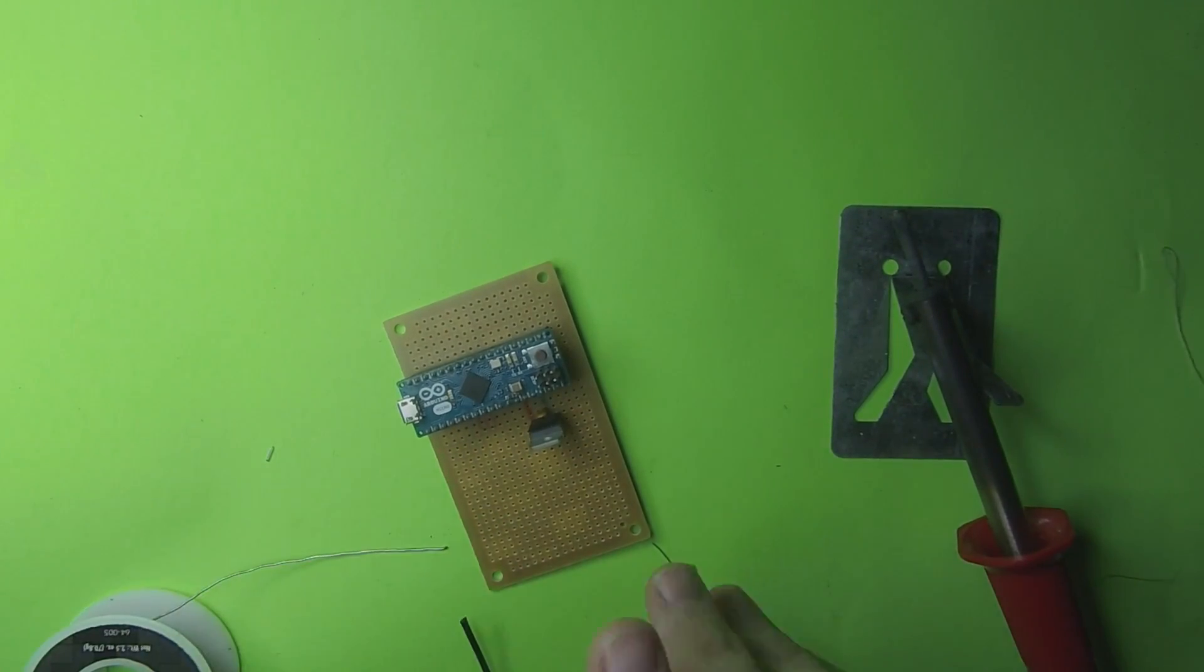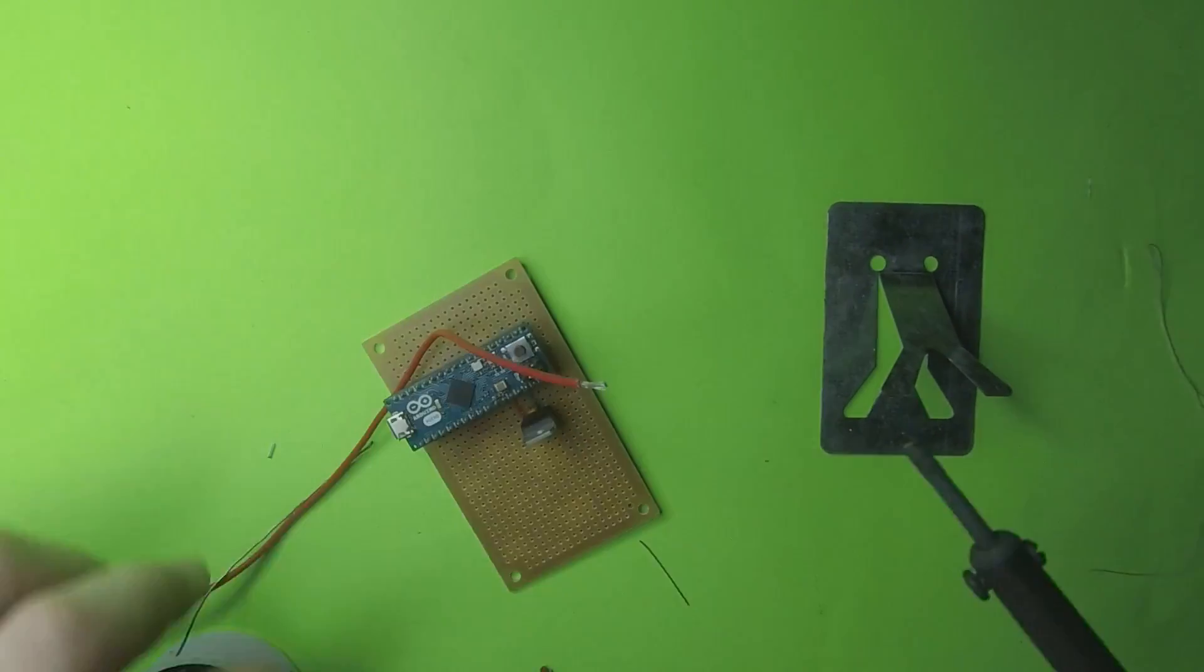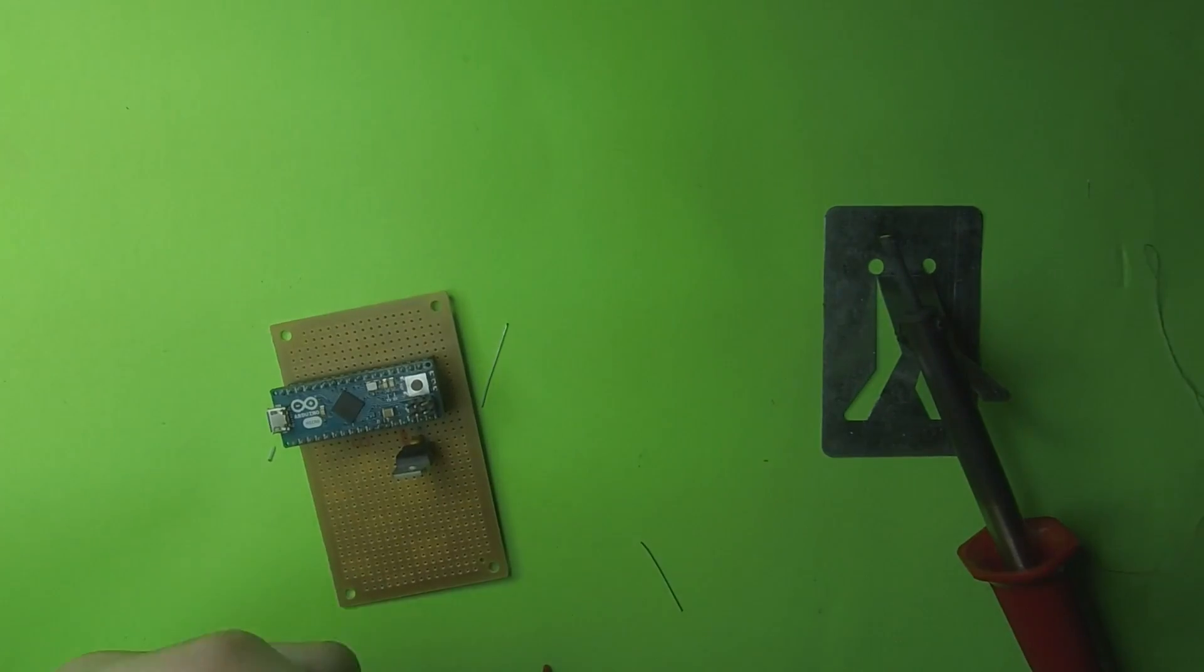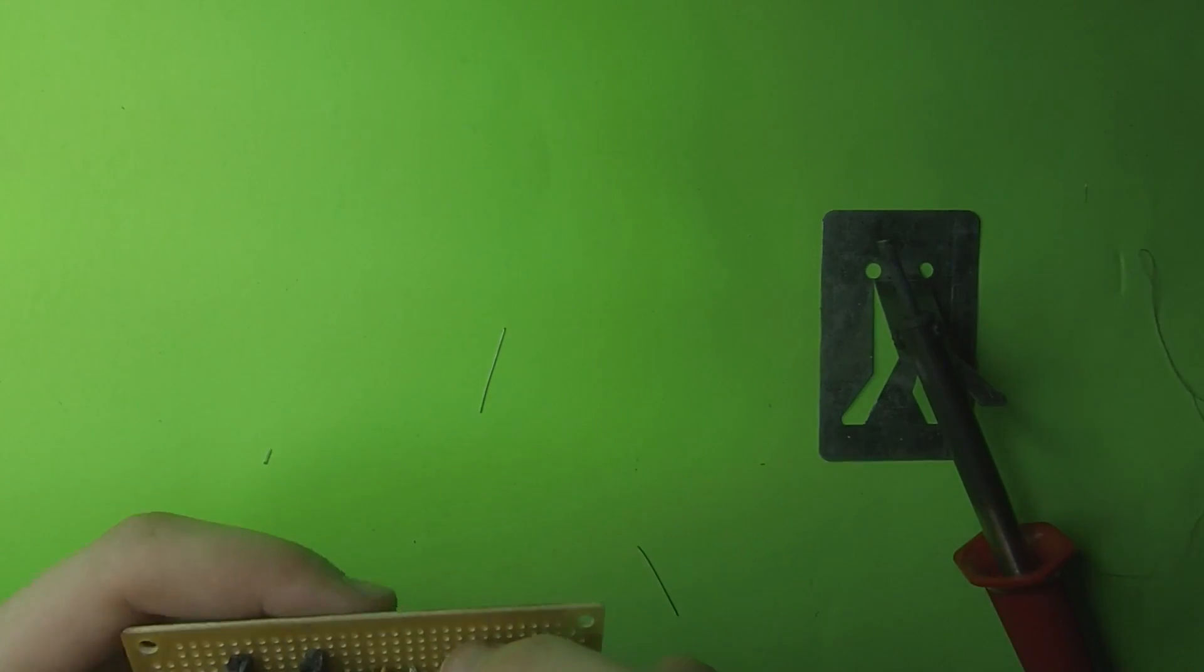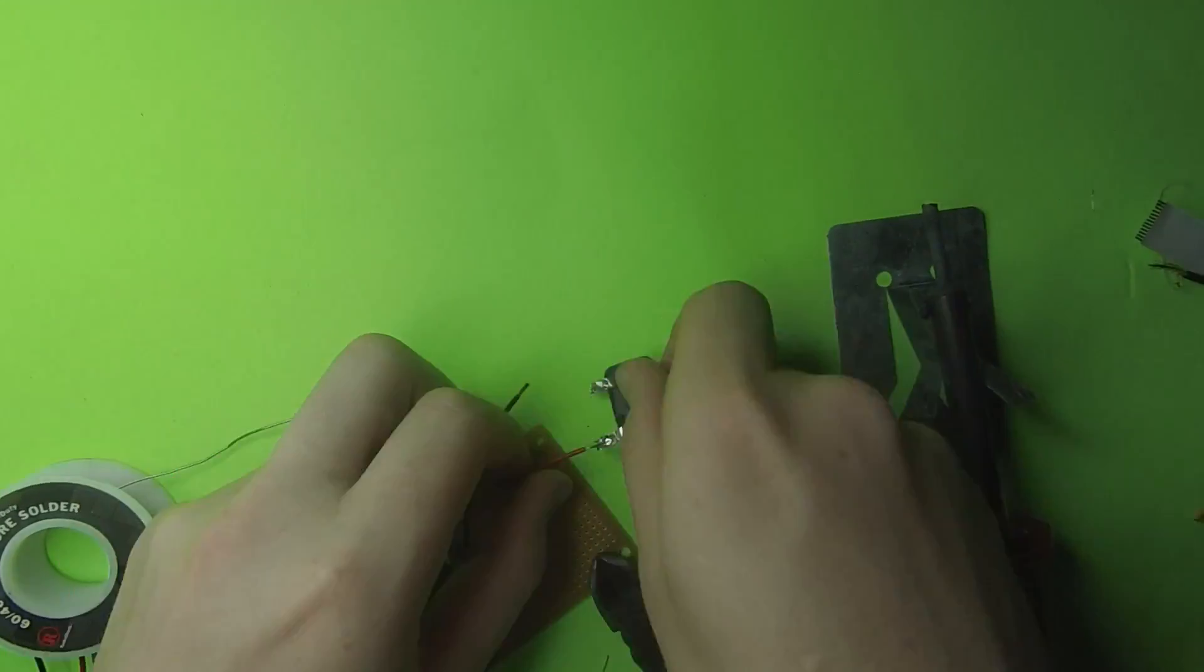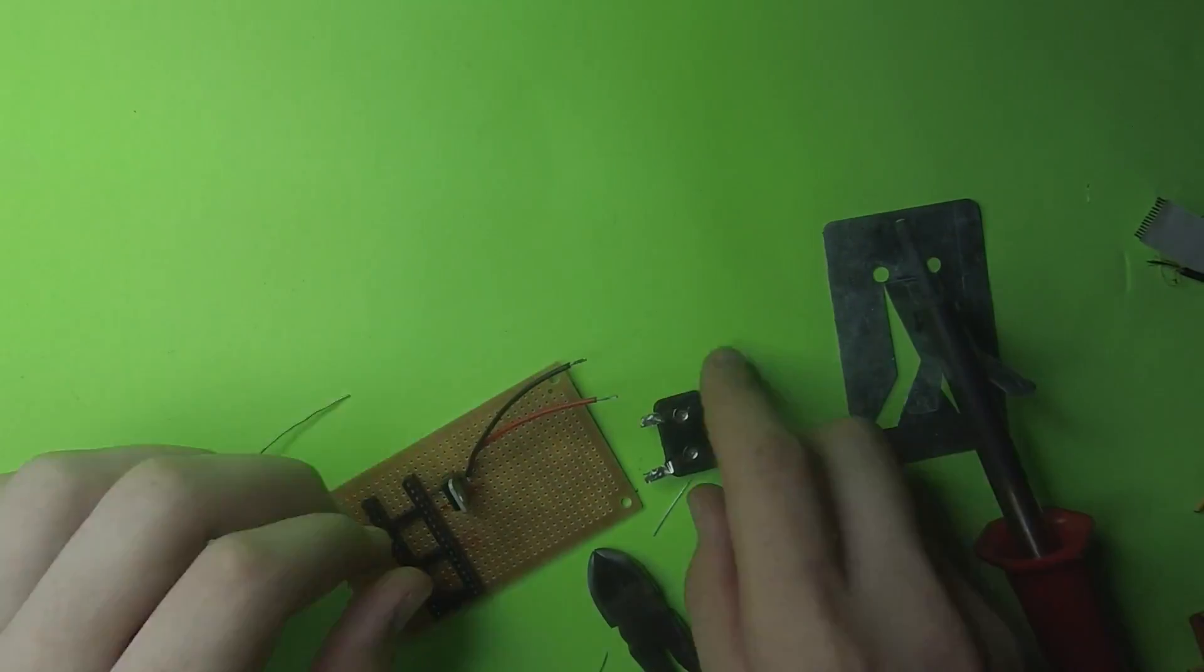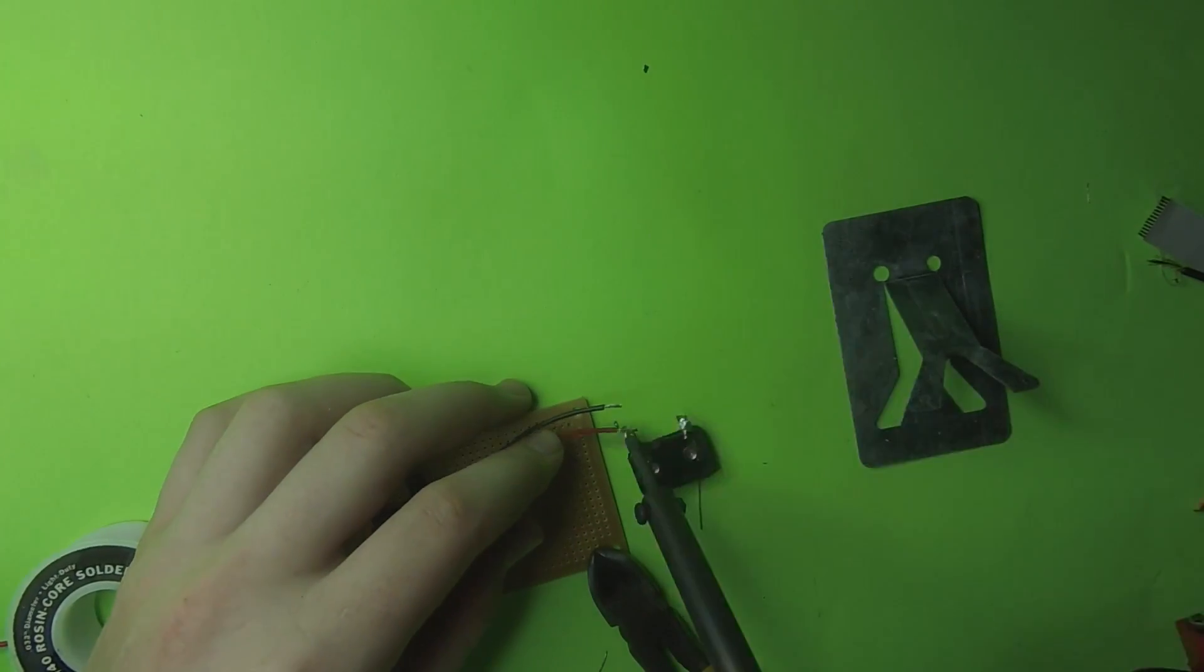Then I took two wires, and I soldered them to the 5-volt regulator. This is where the 9-volt will attach. And that is also where we will solder the 9-volt clip to. So, I'm doing that right now.